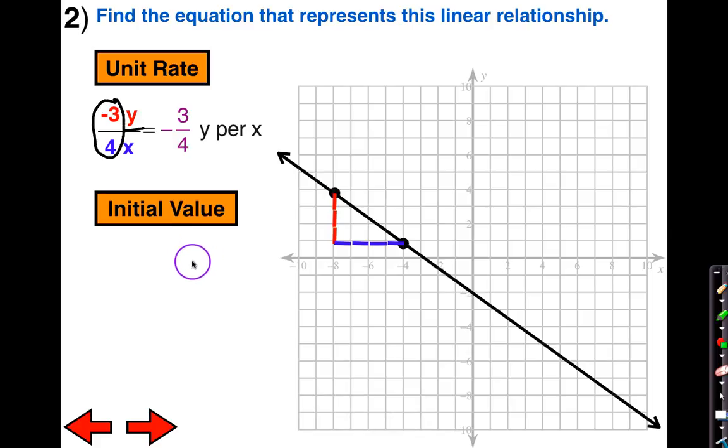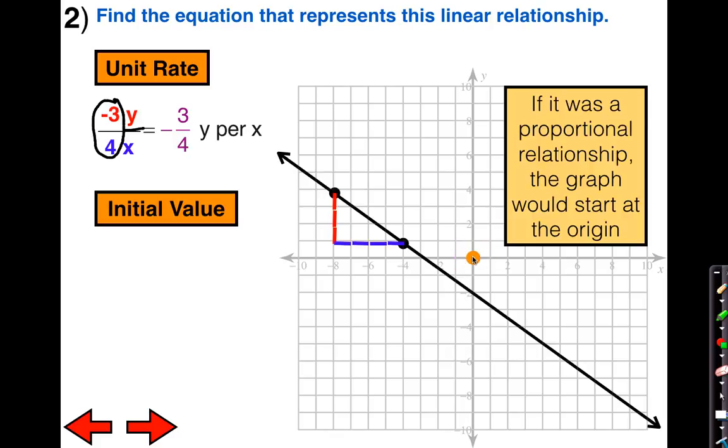The next thing we need to do is find the initial value. But before we do that, I want you to draw in what we learned from 7th grade. This would be a proportional relationship if and only if it went through the origin because it's already linear. I'm going to draw one exactly like that where it is a proportional relationship, the same line except it's actually going through the origin.